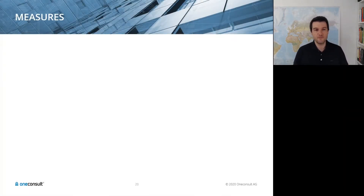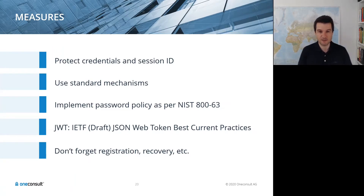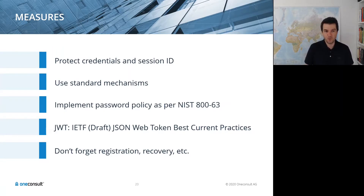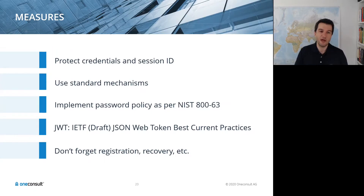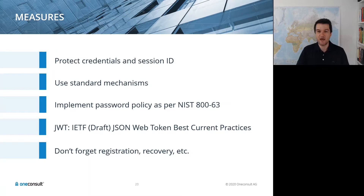General measures: protect credentials and session IDs, use standard tried-and-true mechanisms across your entire solution. Look at NIST SP 800-63 for current password complexity recommendations. Enable multi-factor authentication for users. If your application consumes or produces JWTs, consult the IETF draft on best current practices. Remember that authentication is not only the login — registration, username recovery, and forgot password functionality can also have weaknesses leading to application compromise.